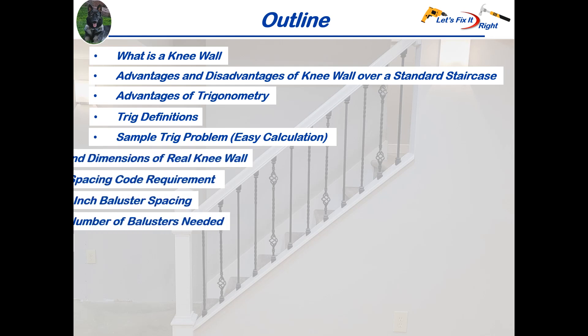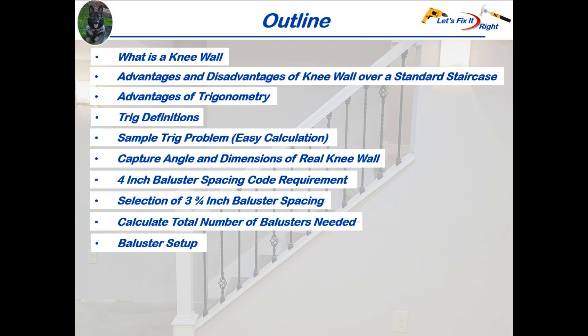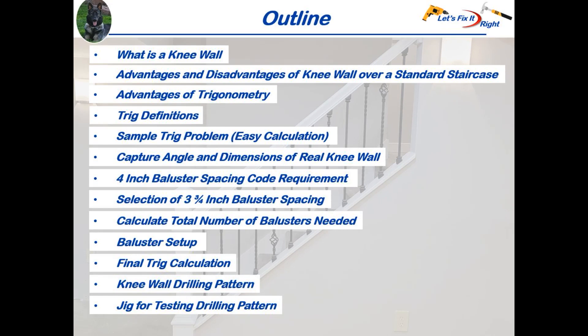With this background knowledge we'll capture the angle and dimensions of my knee wall to test the building code for four inch baluster spacing, the three and three quarter inch baluster spacing for my staircase which meets this code, the total number of balusters needed for my stairs, and my metal baluster setup, and my final trig calculation which took approximately one minute. Lastly using my baluster spacing from this calculation I'll show you the knee wall drilling pattern and wooden jig I used to test this pattern.